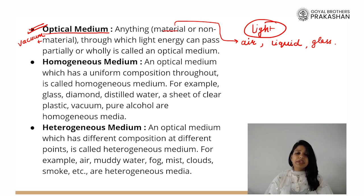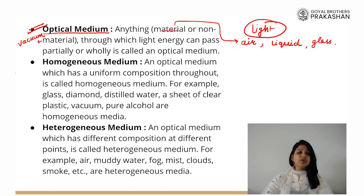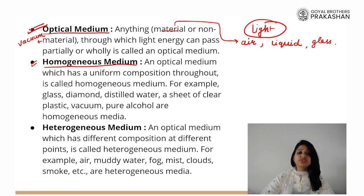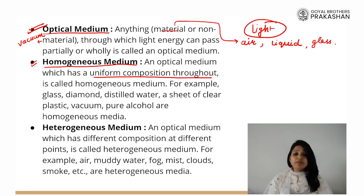So what is an optical medium? A medium through which light energy can pass partially or fully. Now let us talk about a homogeneous medium. An optical medium which has a uniform composition throughout is called a homogeneous medium.